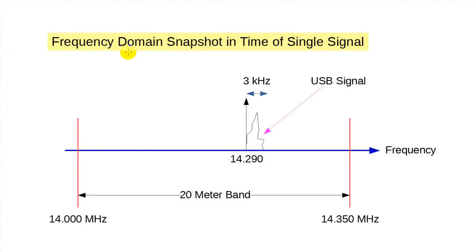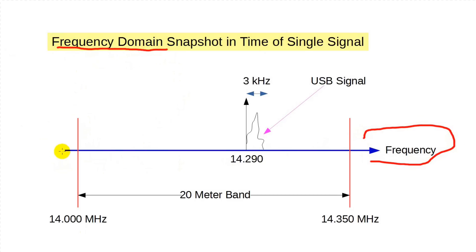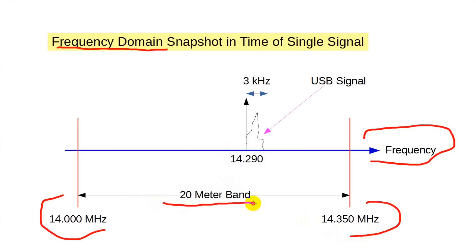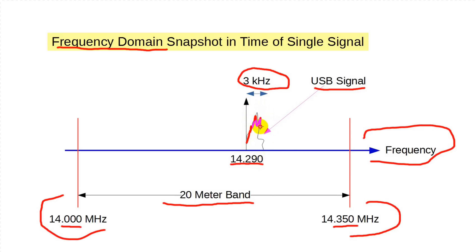First, let's look at something more basic: the real-time spectrum. We've talked in many videos about looking at radio signals in the frequency domain. We represent lower frequencies on the left-hand side and higher frequencies on the right-hand side. For example, you can represent the entire 20-meter ham band as going from 14.0 to 14.350 megahertz. A given upper sideband signal uses about 3 kilohertz of bandwidth, so if there were a signal at 14.290 megahertz, the spectrum at any given instant might look something like this.